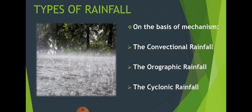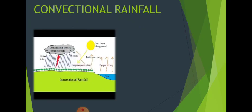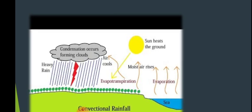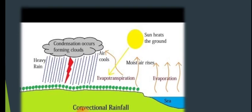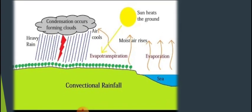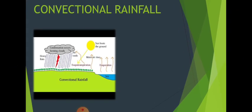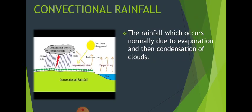Let's understand each one. For conventional rainfall, if you look at the diagram, you can see evaporation happening, then condensation, then rain. This is a simple, normal system — water evaporates due to heat, moisture rises, condenses to form clouds, and then rainfall occurs. Rainfall which occurs normally due to evaporation and then condensation of clouds is known as conventional rainfall.